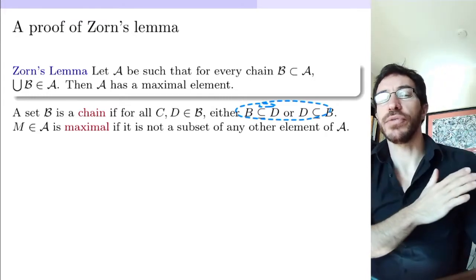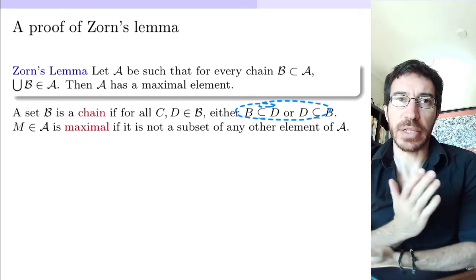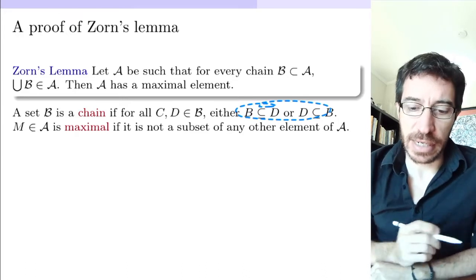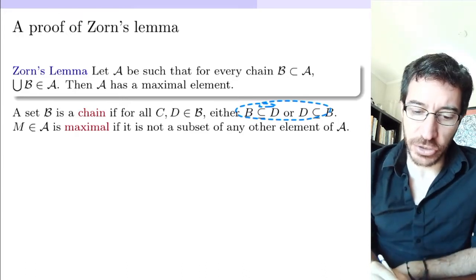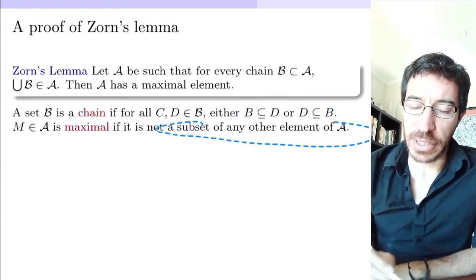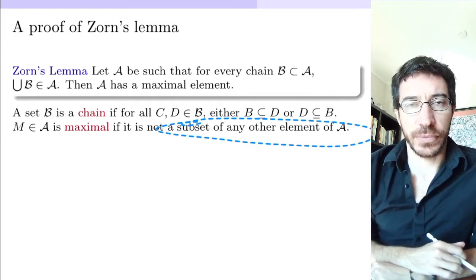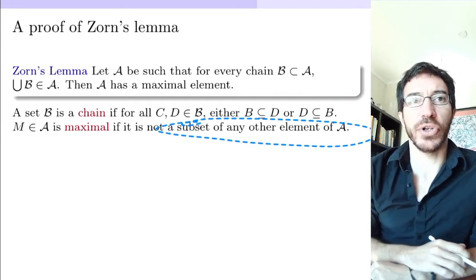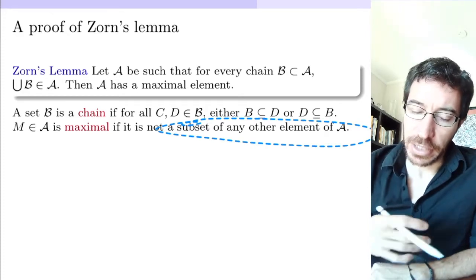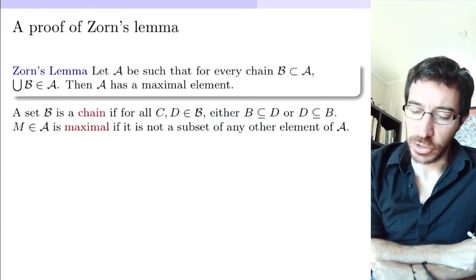And as we saw before in previous videos, this is super useful to prove a bunch of things. A maximal element means it's an element of the collection that is not a proper subset of any other element in the collection — so it's not properly included in any other element of the collection.